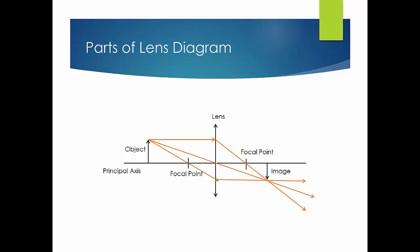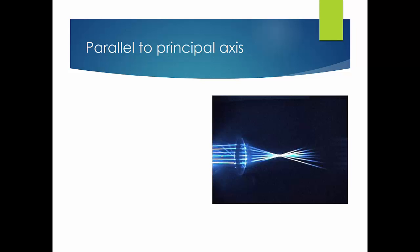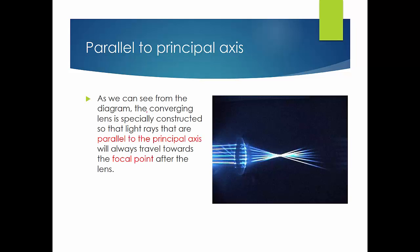One important point: the lens and the principal axis must always be at 90 degrees. The first light ray is parallel to the principal axis. We choose this ray because the converging lens is specially constructed so that any light ray parallel to the principal axis will always travel towards the focal point after passing through the lens — and it continues beyond the focal point, not stopping there.